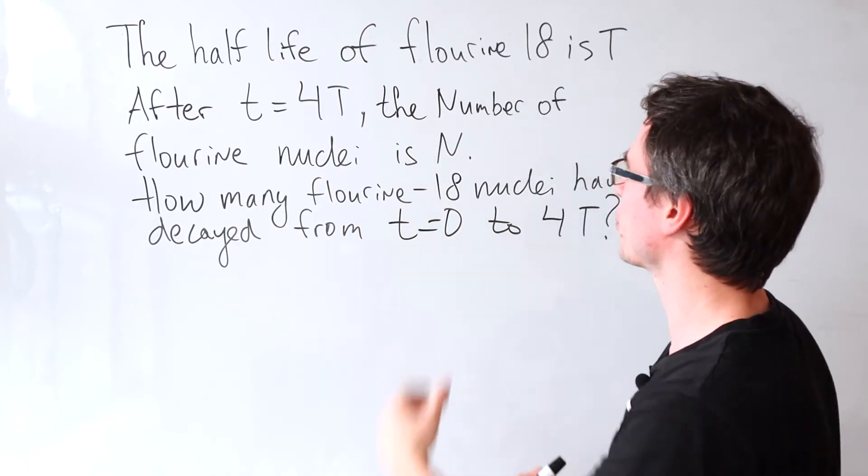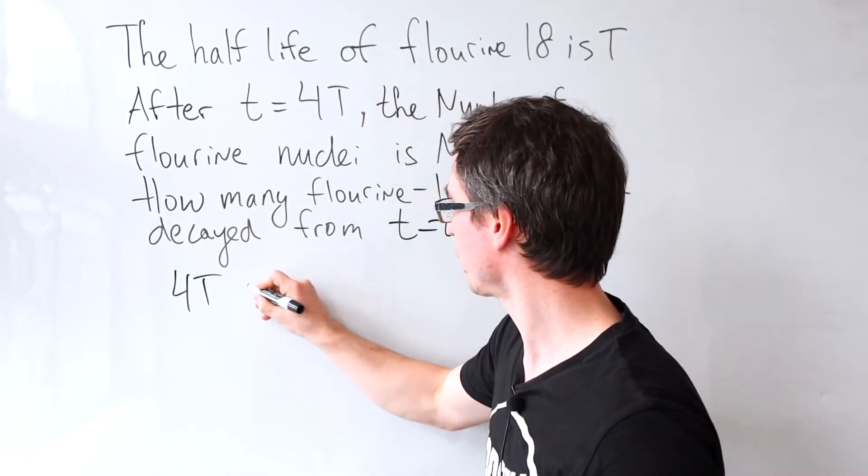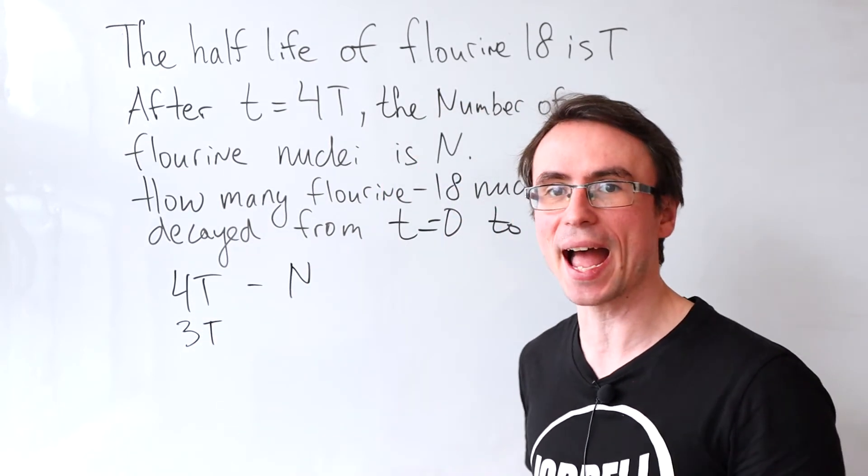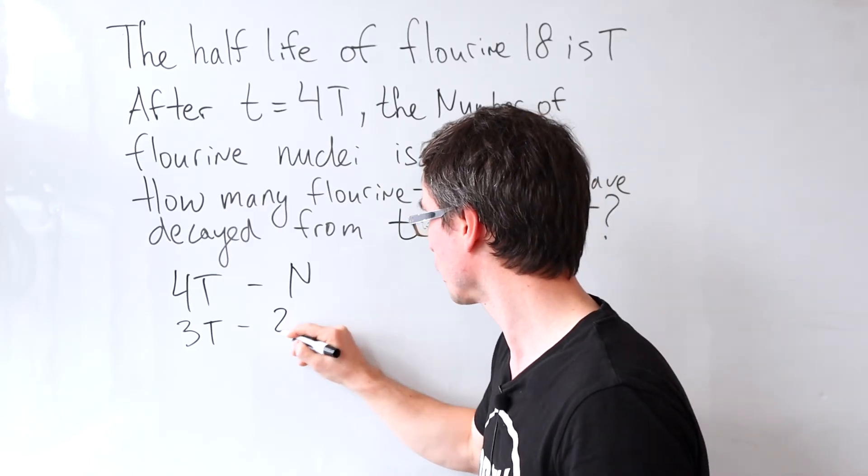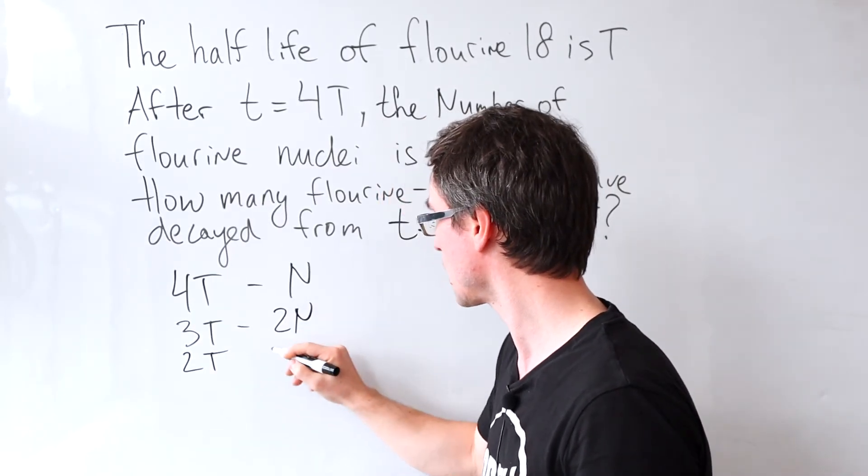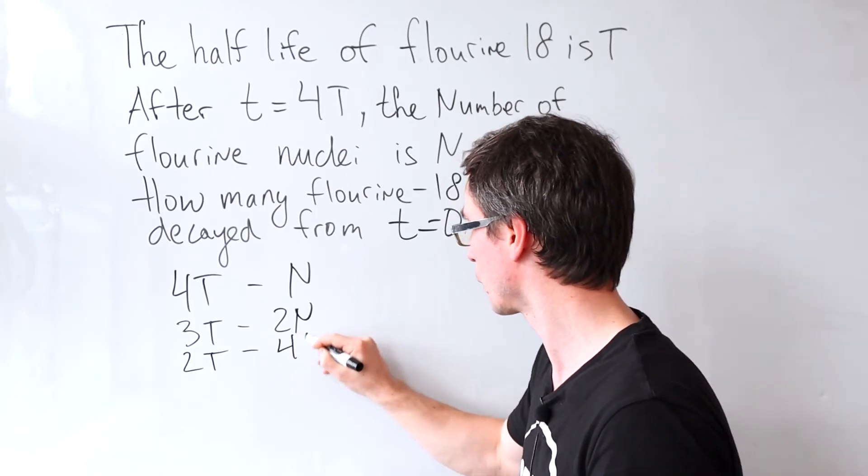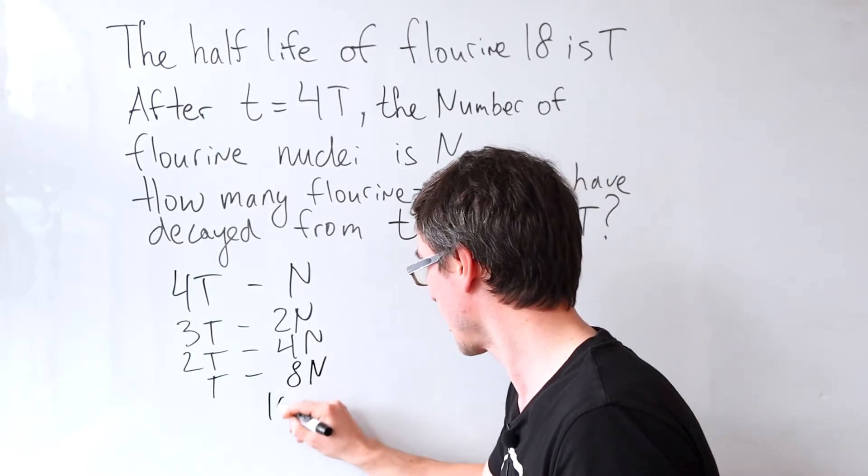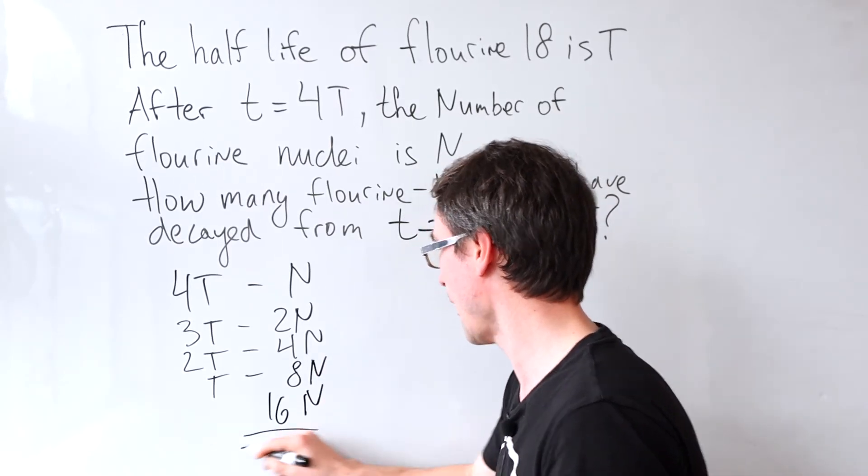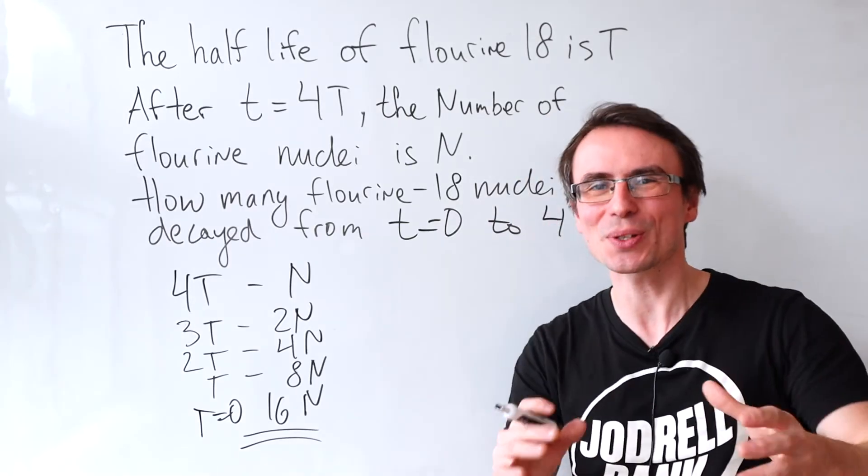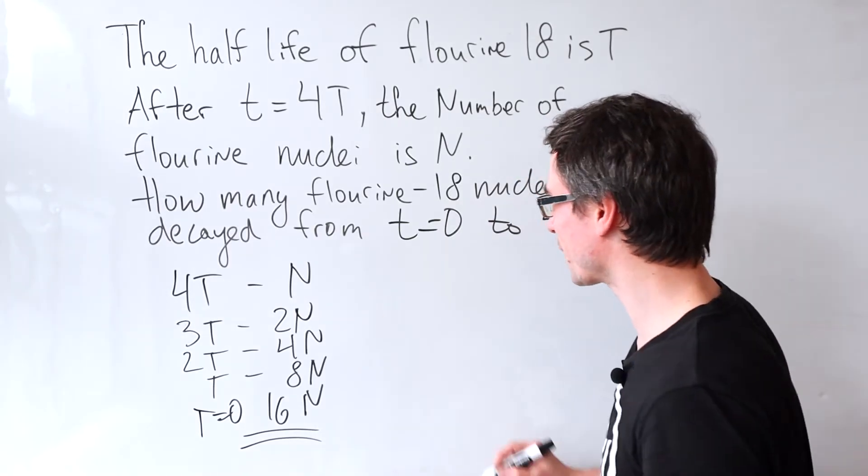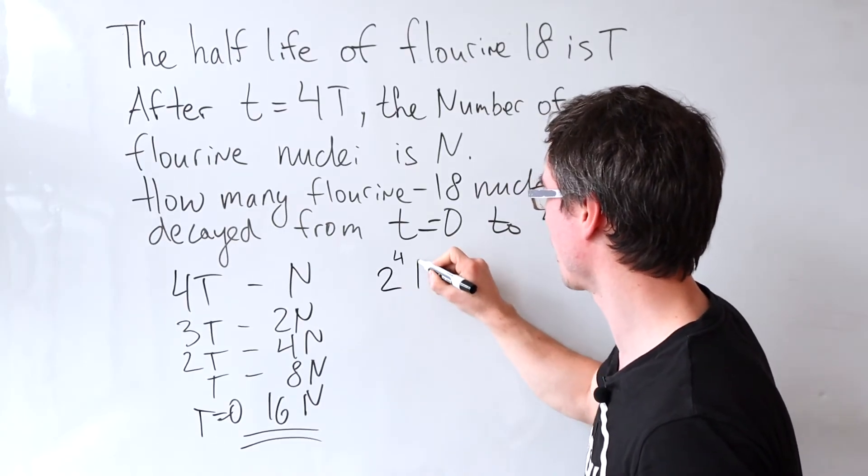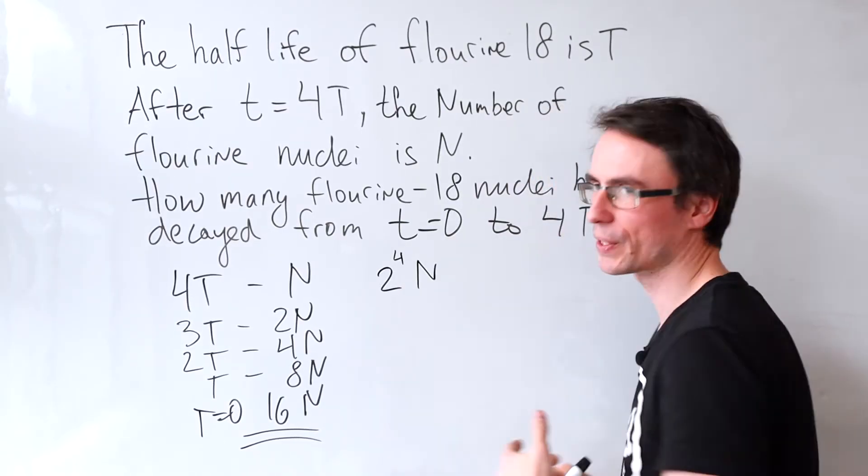So if at four half-lives, we have n, that means that one half-life before that at 3t, we'll have double that, 2n at 2t, we'll have double that again, which is 4n, and then we are going to get 2, 8n, and then sort of 16n at t is equal to zero. This is just the intuitive approach. But of course, we can absolutely say that the number of particles will just be equal to 2 raised to the power of 4 times n, which is just 16n.